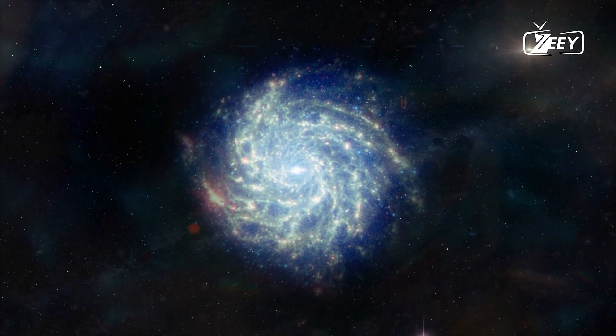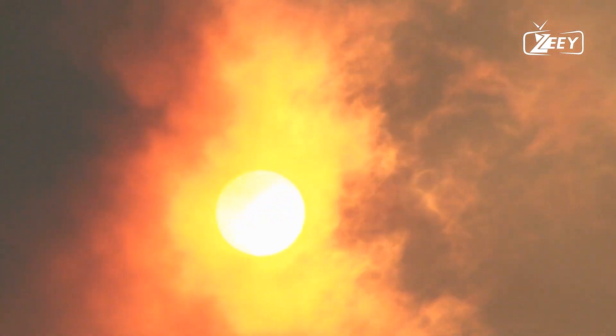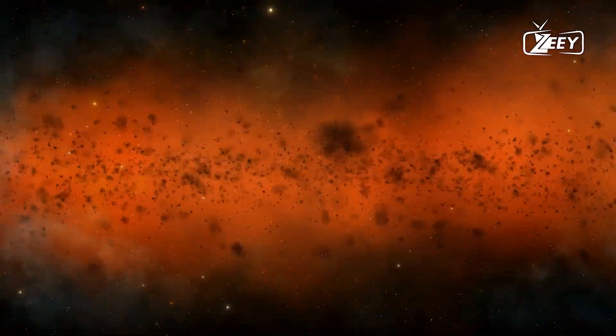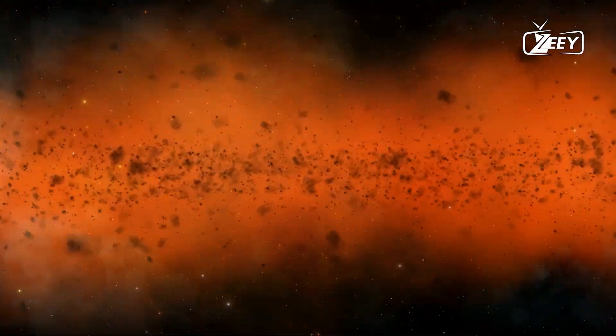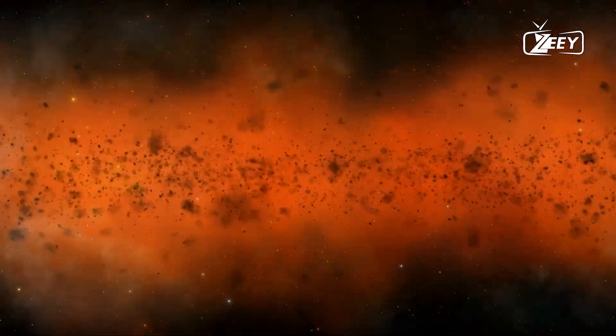The majority of people are familiar with supernovae that have an iron core collapse. When a large star, one that is at least 10 times the mass of the Sun, runs out of nuclear fuel, the star's iron core collapses due to gravity, leaving behind a black hole or neutron star.